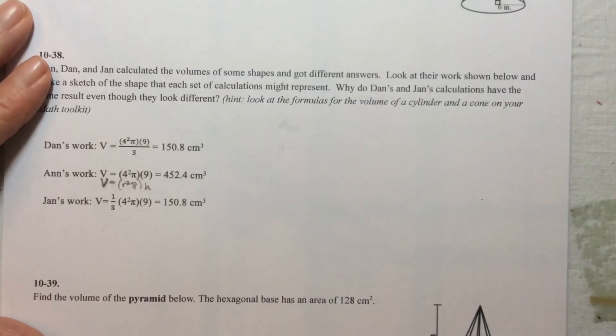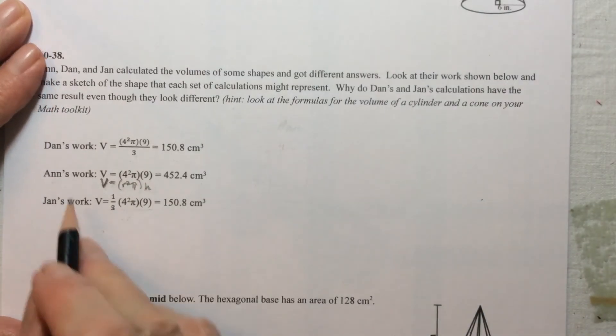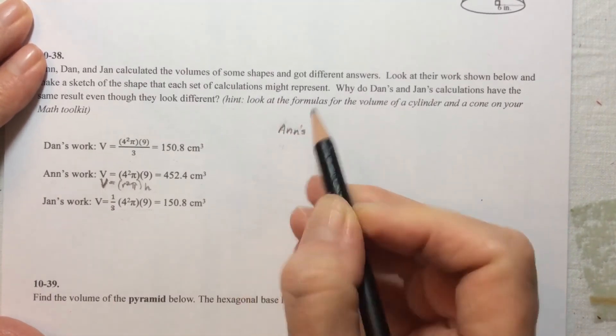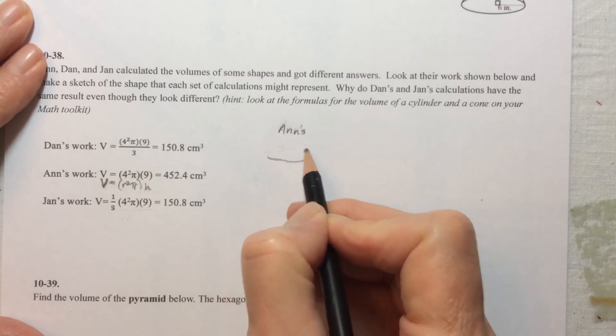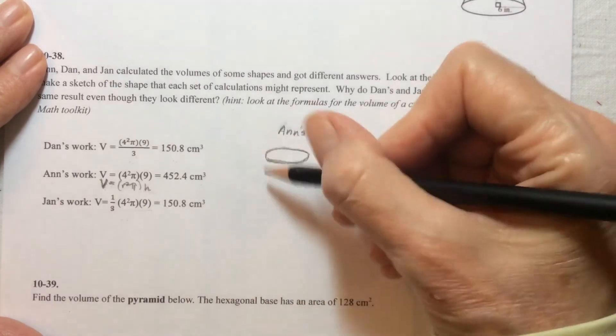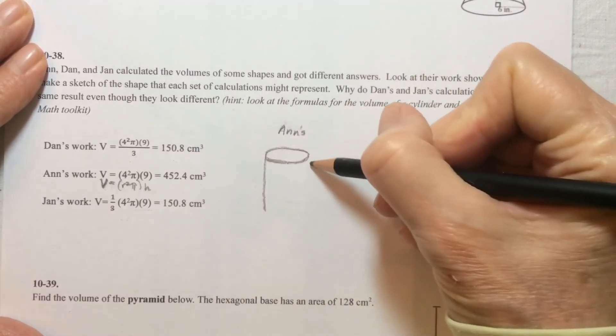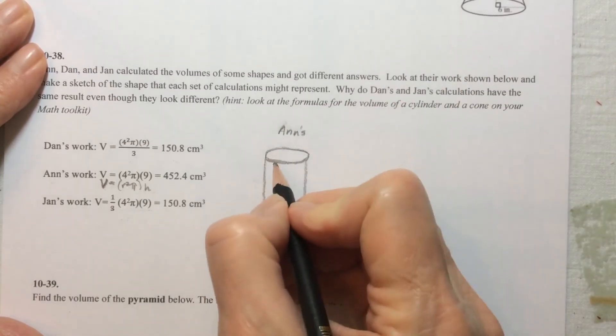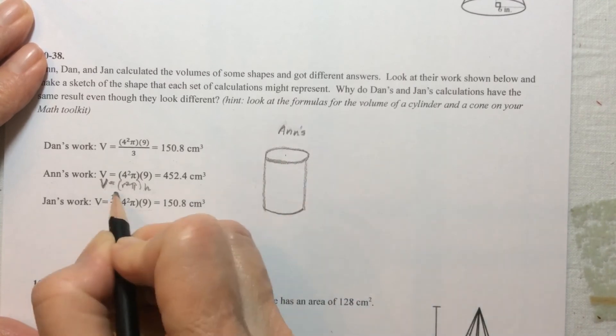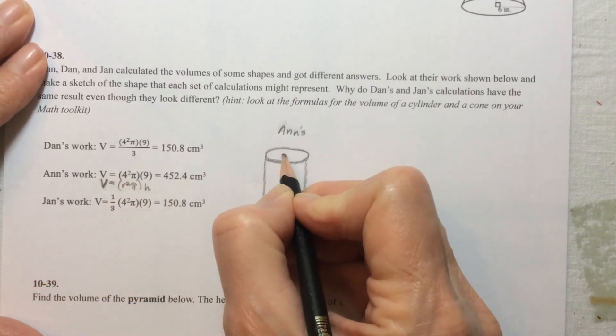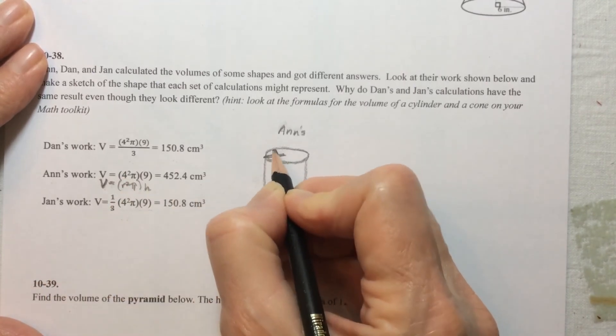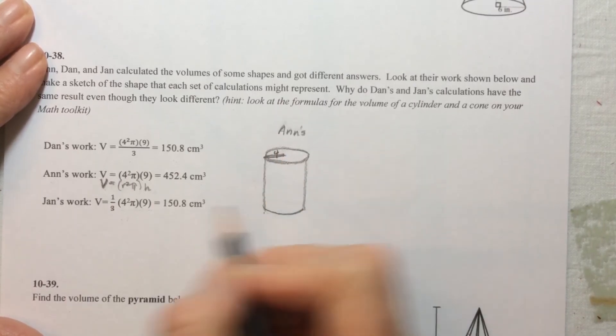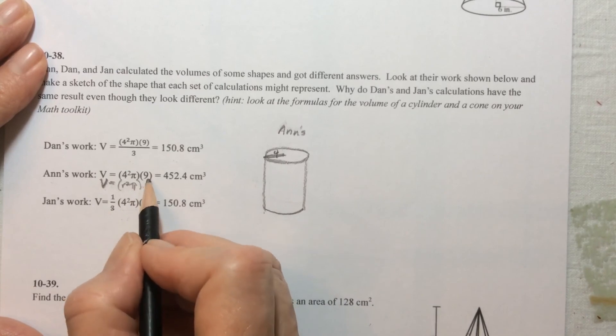So we can actually create a sketch of Ann's shape. So we'll make the base of the cylinder and draw the height and then the other base and for r squared that's four squared. So we'll put four right there for the radius and then for the height we will put nine.